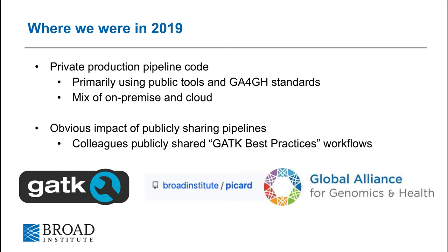The idea for WARP was started in 2019. We pulled together multiple efforts from across the Broad Data Sciences Platform to unify our production pipeline development. At that time, Broad production pipelines were in private repositories. The pipelines sometimes had Broad infrastructure-specific steps, like writing to databases. They did use mainly open source and public tools, but the code connecting them was private, sparingly documented, and not nearly reproducible enough or transparent enough to the consumers of the data that we produced.